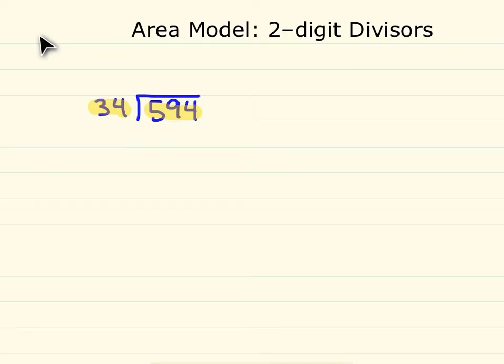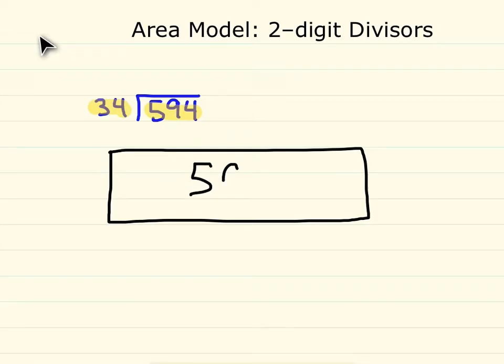In this rectangle here, our dividend will be the inside of it, so we need the inside to eventually be 594. However, we will not use the whole piece at one time.